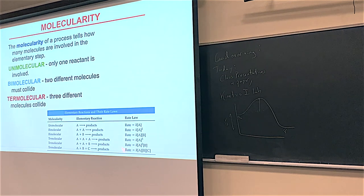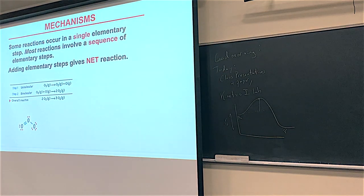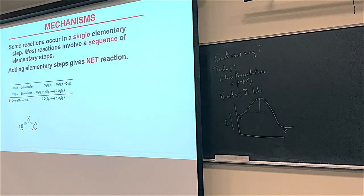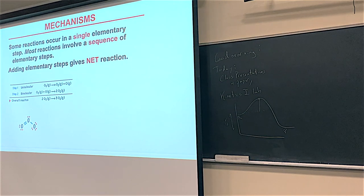In our Kinetics 1 lab from last week, you're hopefully seeing roughly first-order acetone and first-order HCl. That just means it takes one HCl and one acetone smashing together to make the reaction start. You can literally use the rate law to help understand what the steps are in the mechanism.